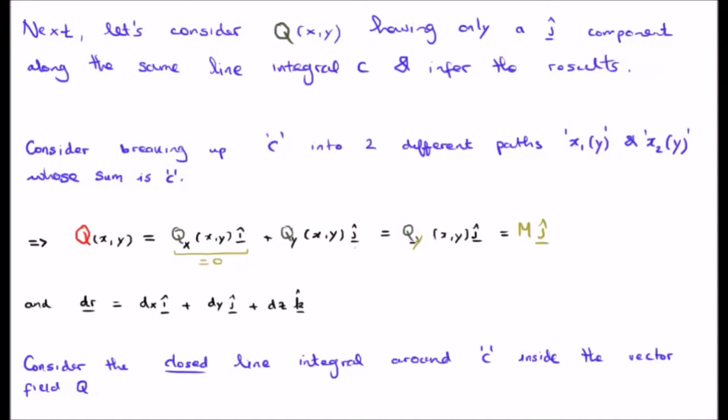Just for convenience I'm going to rewrite this as capital M j-hat. So Q manifests as Q sub y j-hat, and I'm just going to call it M j-hat—that's the general thing which people do when discussing Green's theorem.